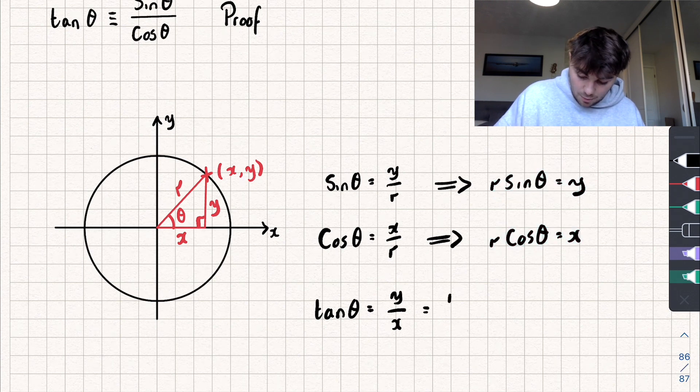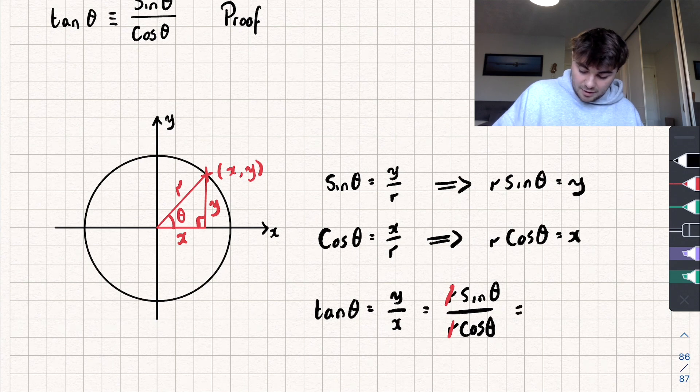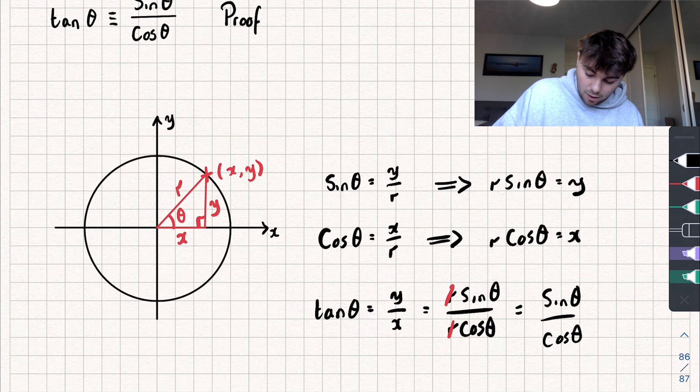So let's substitute that in. So we get, well that's equal to r sine theta divided by r cosine of theta. And these r's are going to cancel and we get that tan of our angle theta is equal to sine of theta divided by cosine of theta. And we've shown the identity to be true.